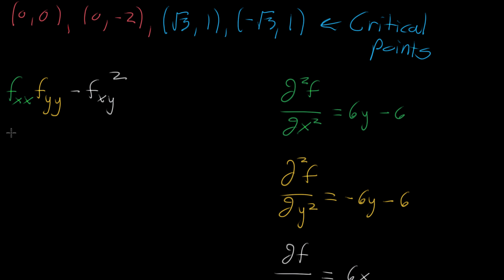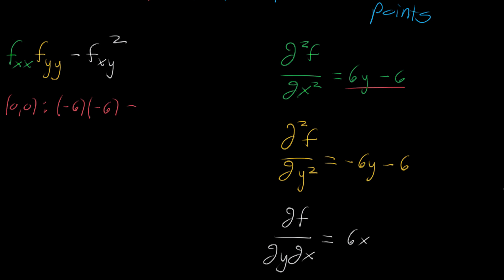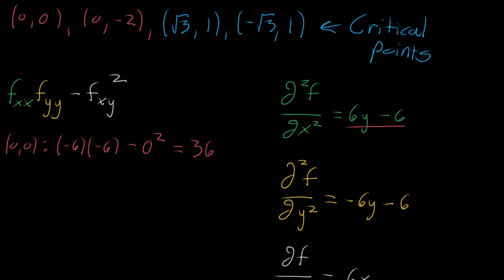When we do this at the point (0, 0): plugging into f_xx, six times zero is zero, so there's just negative six. That gives us negative six multiplied by f_yy — again, y goes to zero, so we're left with just negative six. Then the mixed partial derivative term is zero because x equals zero, so we're subtracting off zero squared. The entire expression equals negative six times negative six, which is 36.